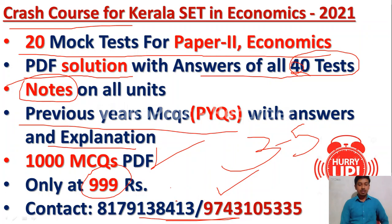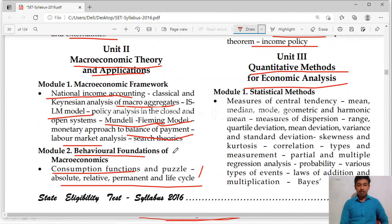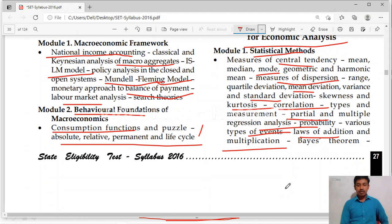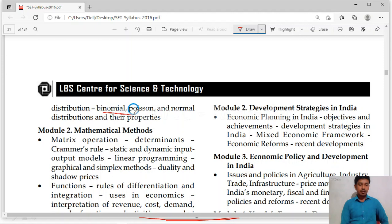Let us come back to the discussion of the syllabus. Module 1 is statistical methods. Here you will study about central tendency — mean, median, mode, geometric mean, harmonic mean. Then measures of dispersion — range, quartile deviation, mean deviation, variance, standard deviation, skewness and kurtosis. Then correlation, types of correlation, various others. Then measurement, partial and multiple regression analysis. Probability, various types of events, laws of addition and multiplication, Bayes' theorem. Binomial distribution, Poisson distribution and normal distribution — one question is compulsory here.